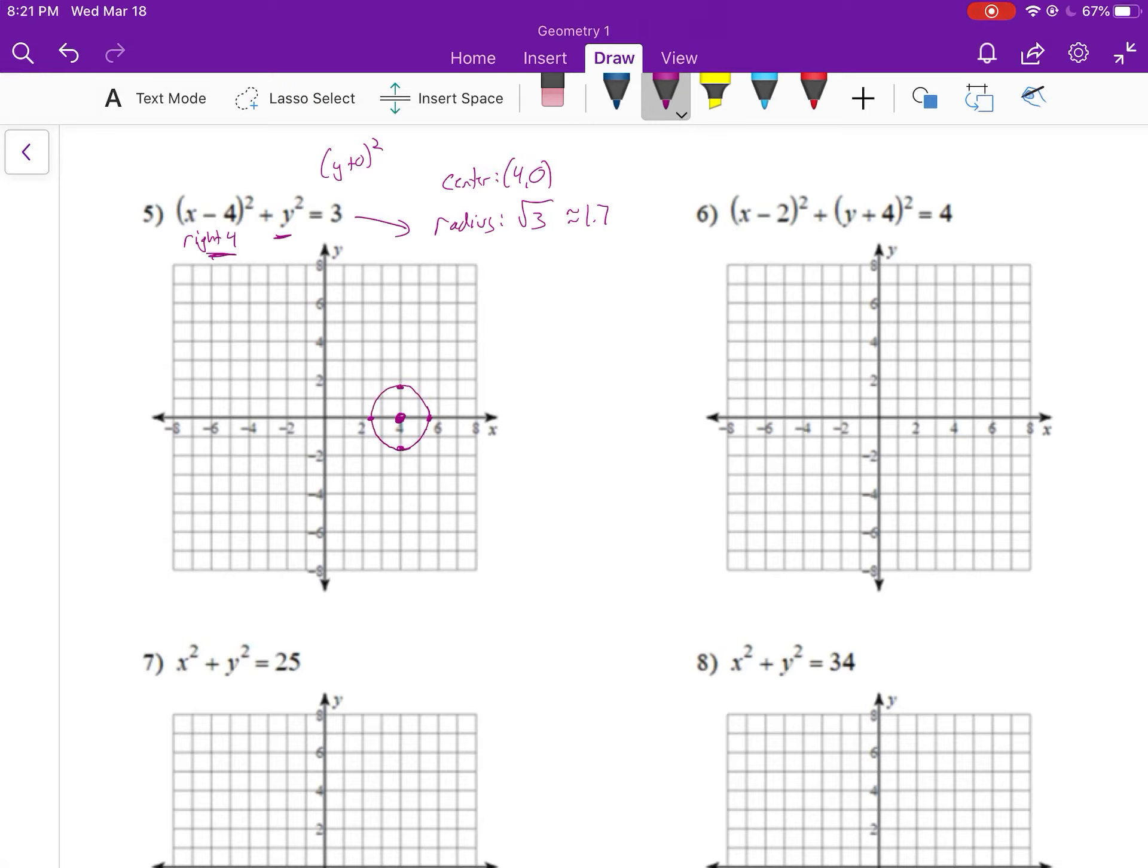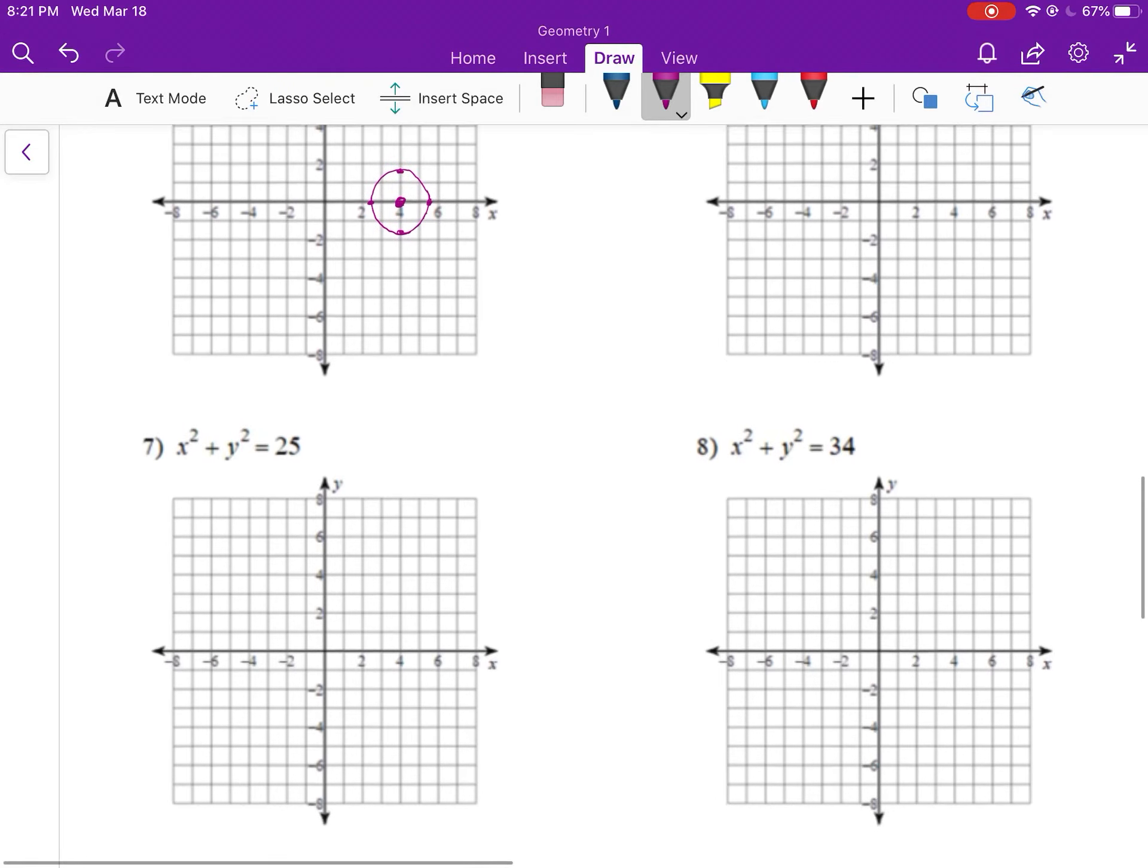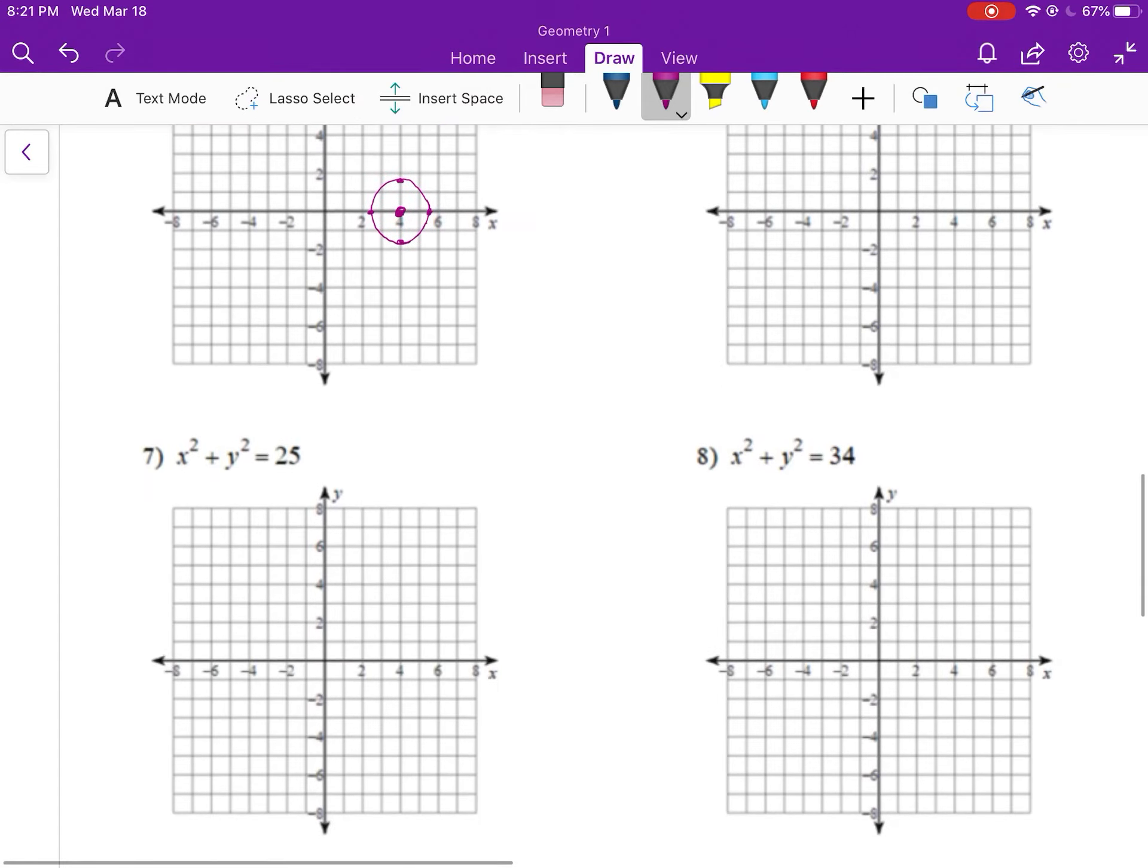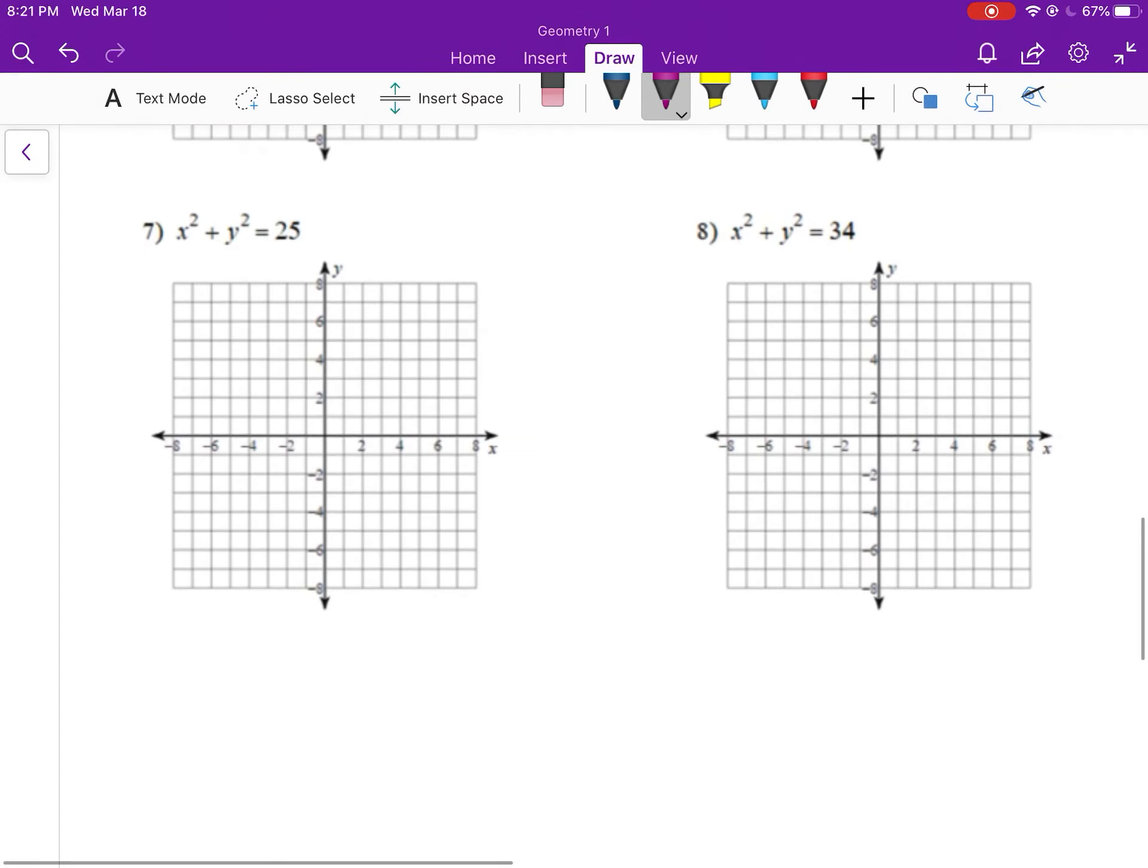Those squircles. And let's look at number seven, actually. Our center doesn't move left or right at all. It doesn't move up or down at all. So the center, this is really the easiest to graph because there's not much to do here. Center's at (0, 0).